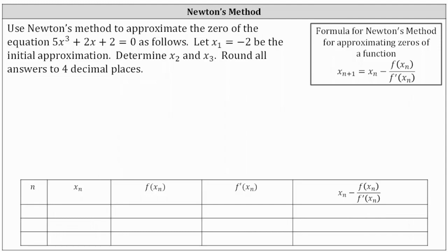Newton's method uses tangent lines to approximate zeros of a function. The formula for Newton's method is x sub n plus one equals x sub n minus f of x sub n divided by f prime of x sub n.